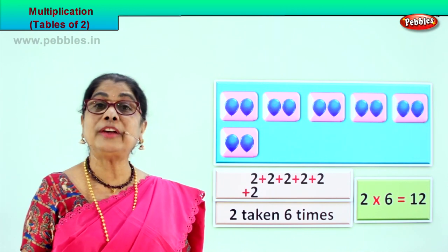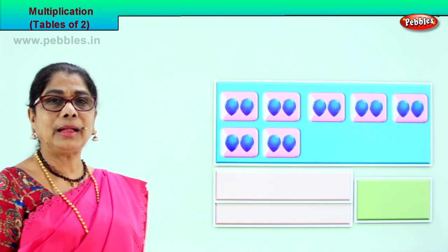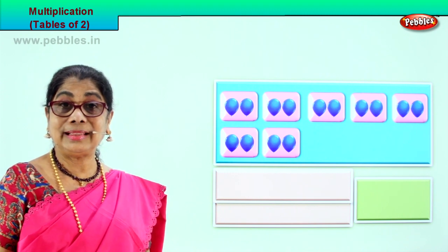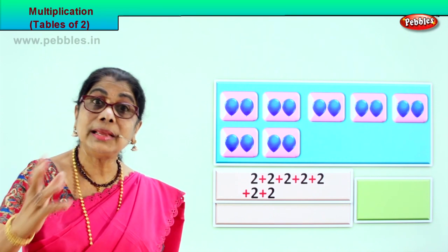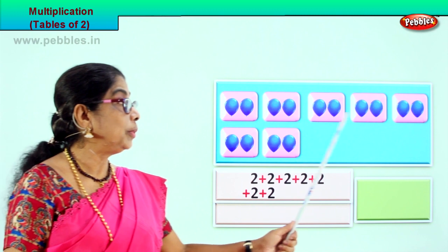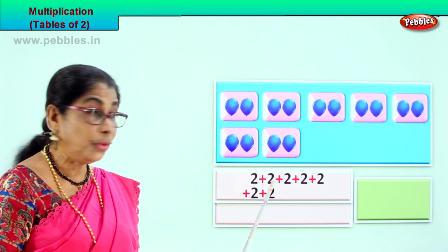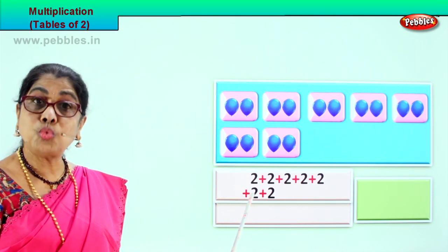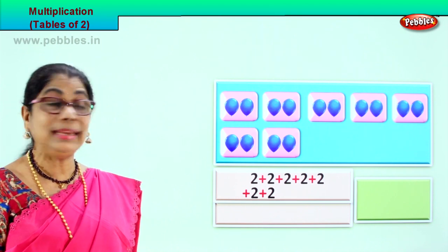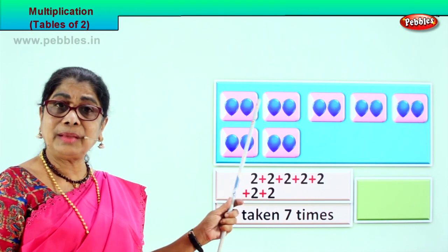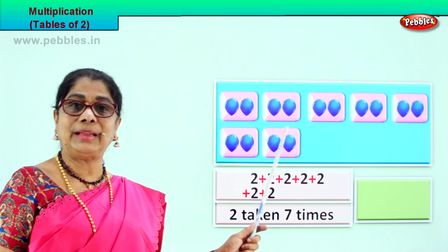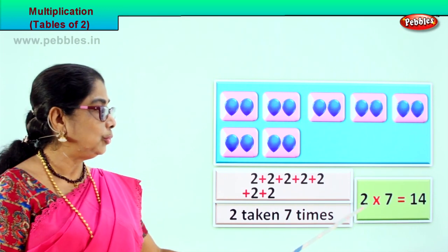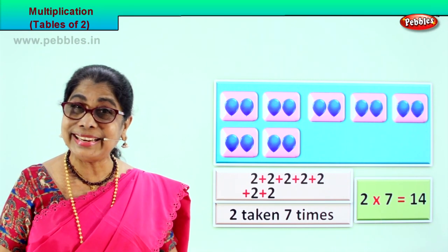Shall we look at another grouping of two? How many groupings of two do we have? One, two, three, four, five, six, seven. Multiplication is repeated addition. Two plus two plus two plus two plus two plus two plus two: four, six, eight, ten, twelve, fourteen. Two taken seven times, seven groups. We represent that in multiplication: two into seven equals fourteen. Two sevens are fourteen.